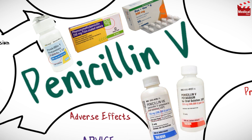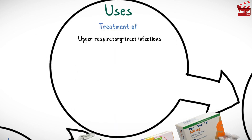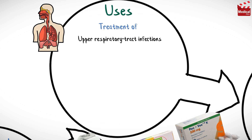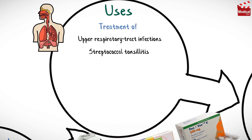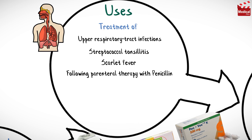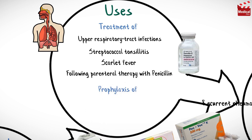125 and 250 milligrams per 5 milliliters oral suspension. It is indicated principally for upper respiratory tract infections, for streptococcal tonsillitis, scarlet fever, and for continuing treatment following parenteral therapy with penicillin.